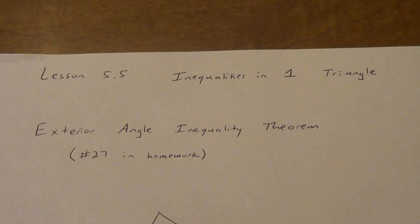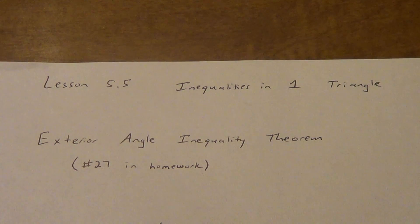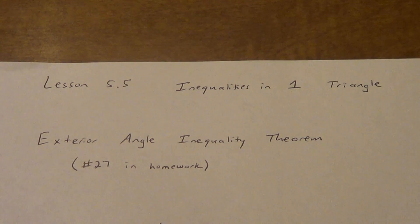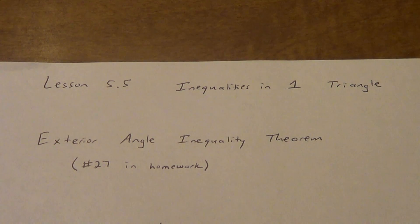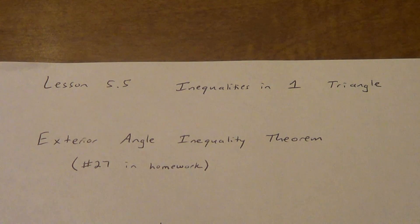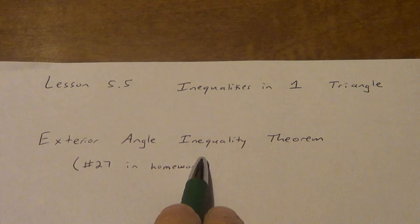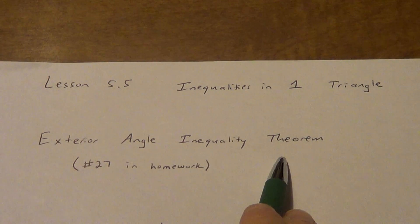We are on the second video now for lesson 5.5, still talking about inequalities in one triangle. You'll notice everything we do in this lesson, we're only going to be able to deal with one triangle at a time. When we get to lesson 5.6, we're going to deal with two separate triangles. Now, this is called the exterior angle inequality theorem.